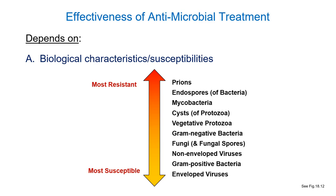Some other tough organisms: mycobacteria — tuberculosis — have mycolic acids, that waxy substance that protects them from gram stains and also from disinfectants. Protozoan cysts are somewhat like endospores with protective layers, though not as tough. Gram negatives are a little tougher than gram positives because they have an extra membrane. Enveloped viruses are the wimpiest things — HIV, for example, does not really survive outside of bodily fluids very easily.